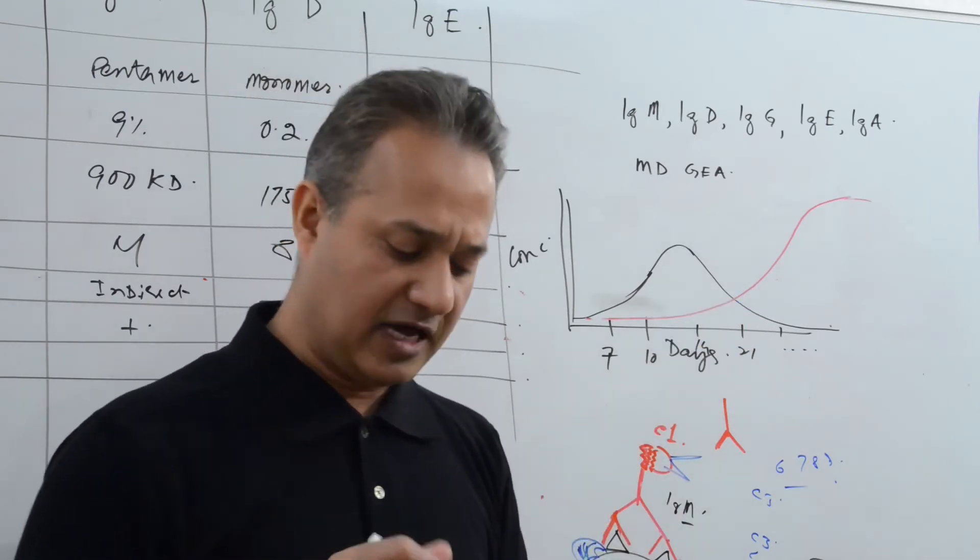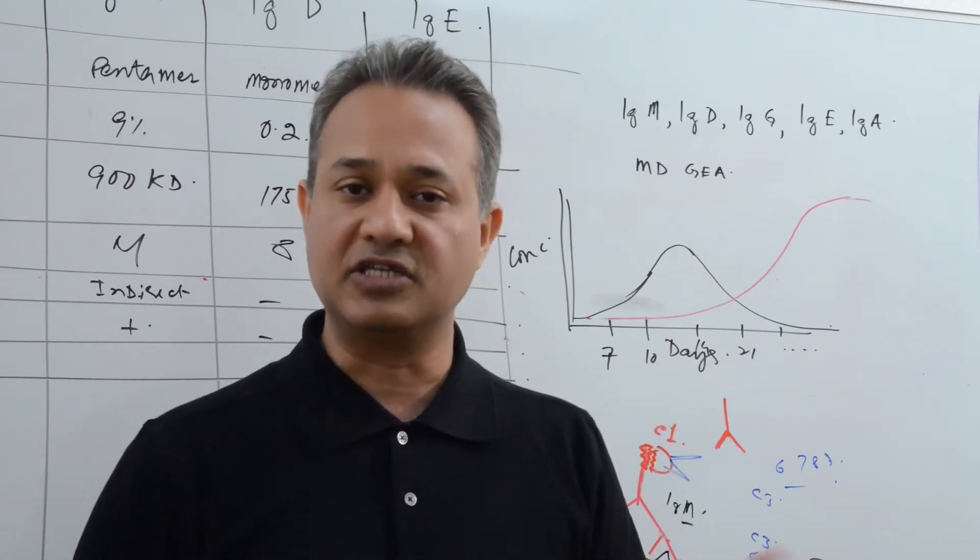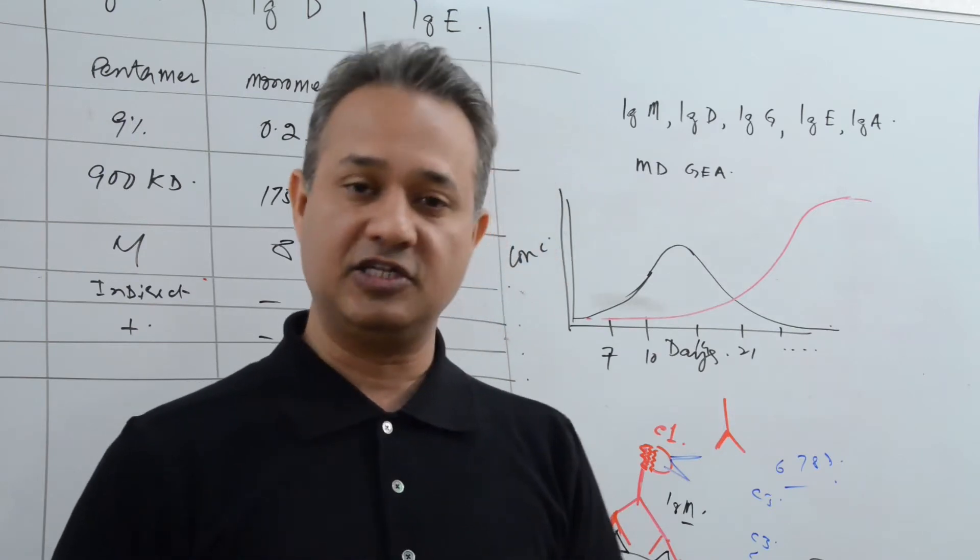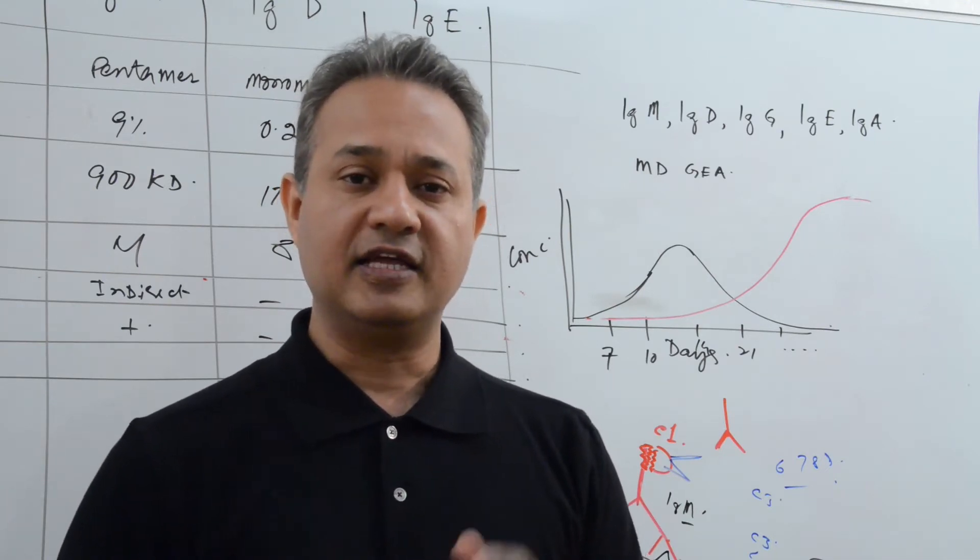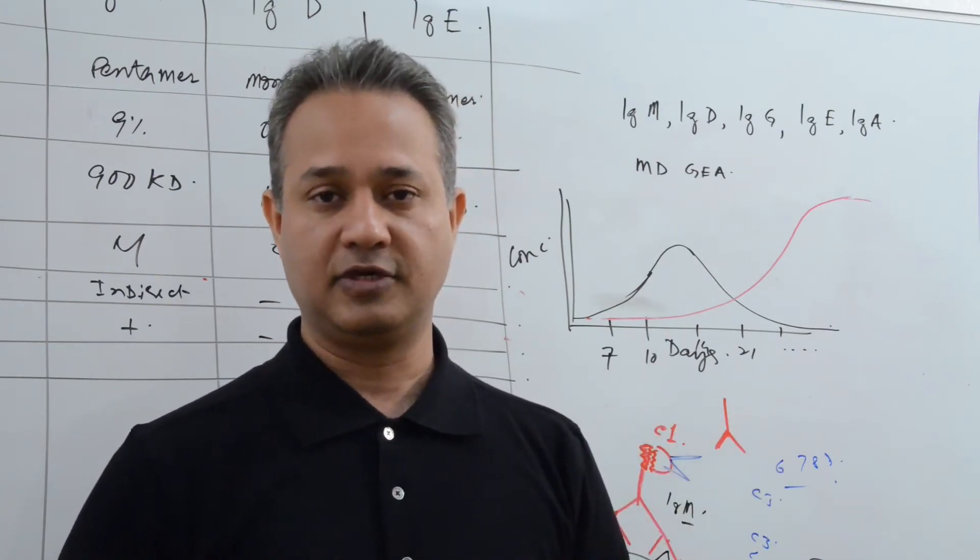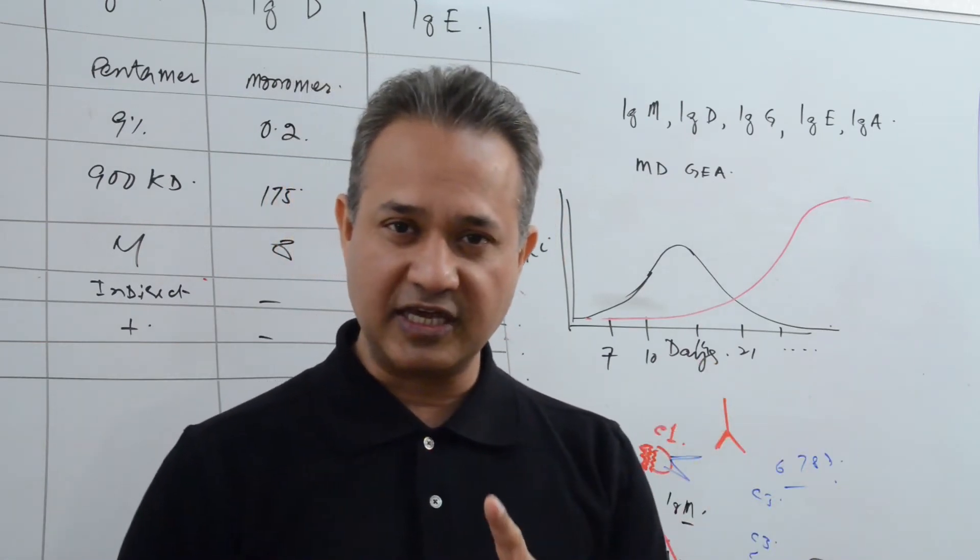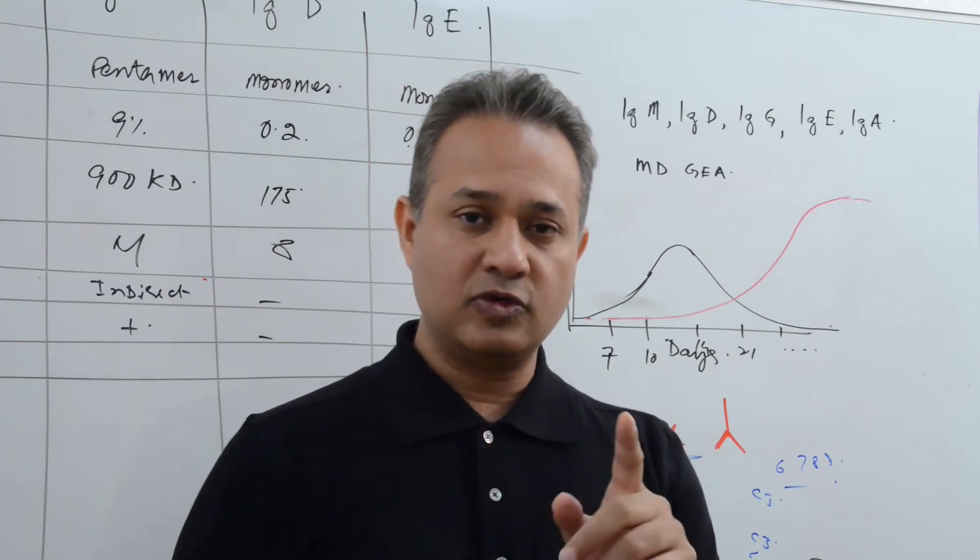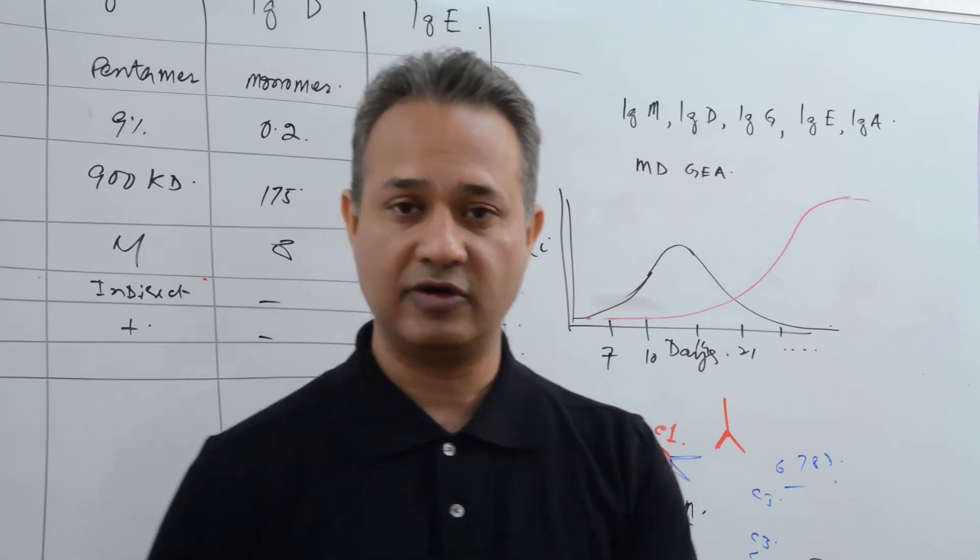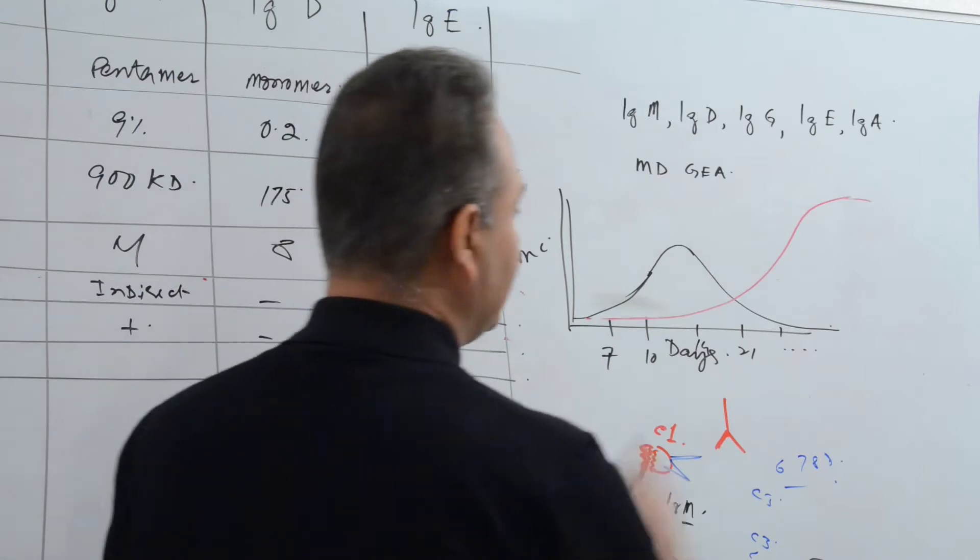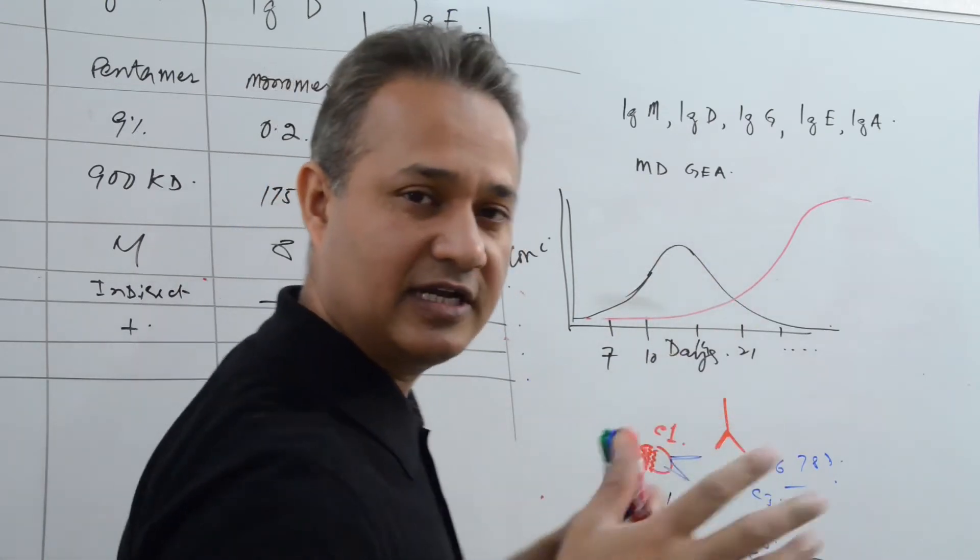So the very first exposure to any antigen for the first time in our life, IgM. Then, after two, three, four weeks, IgG. So if I am exposed to an antigen, or if you take my plasma, and you see IgM of a particular type present, but no IgG for that antigen present, and you can do that by agglutination tests, you can easily say that Mubeen is exposed to this pathogen for the first time. However, if you see IgG present, then you can say Mubeen was exposed long enough to this pathogen.